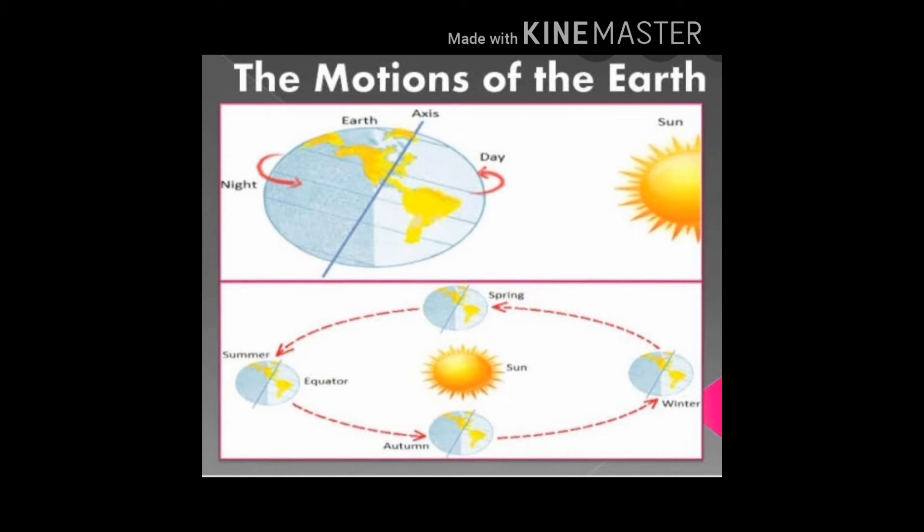We know that the earth is spherical in shape. It looks like a ball. The part of the earth facing the sun receives heat and light and we have the day. The other part or the hidden part will be dark and we have the night.